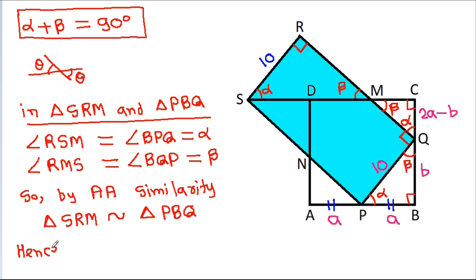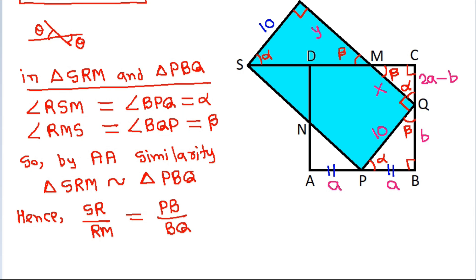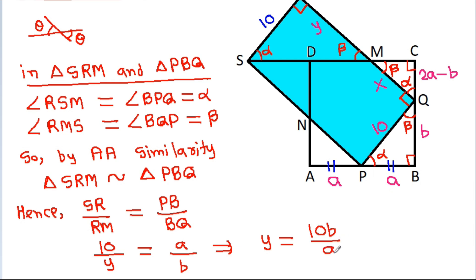Hence, SR by RM will be equal to PB by BQ. Suppose QM is X and RM is Y. Then SR is 10, RM is Y, and it is equal to PB is A, BQ is B. So Y will be equal to 10B by A.